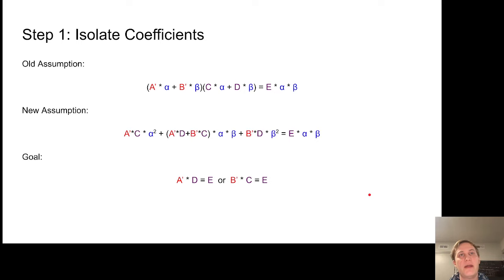The first thing we do is put the polynomial into normal form so each monomial is a distinct term by distributing out. What we get is that A prime times C is the α squared coefficient, A prime times D plus B prime times C is the αβ coefficient, and B prime times D is the β squared coefficient, and on the right-hand side we have the same thing.